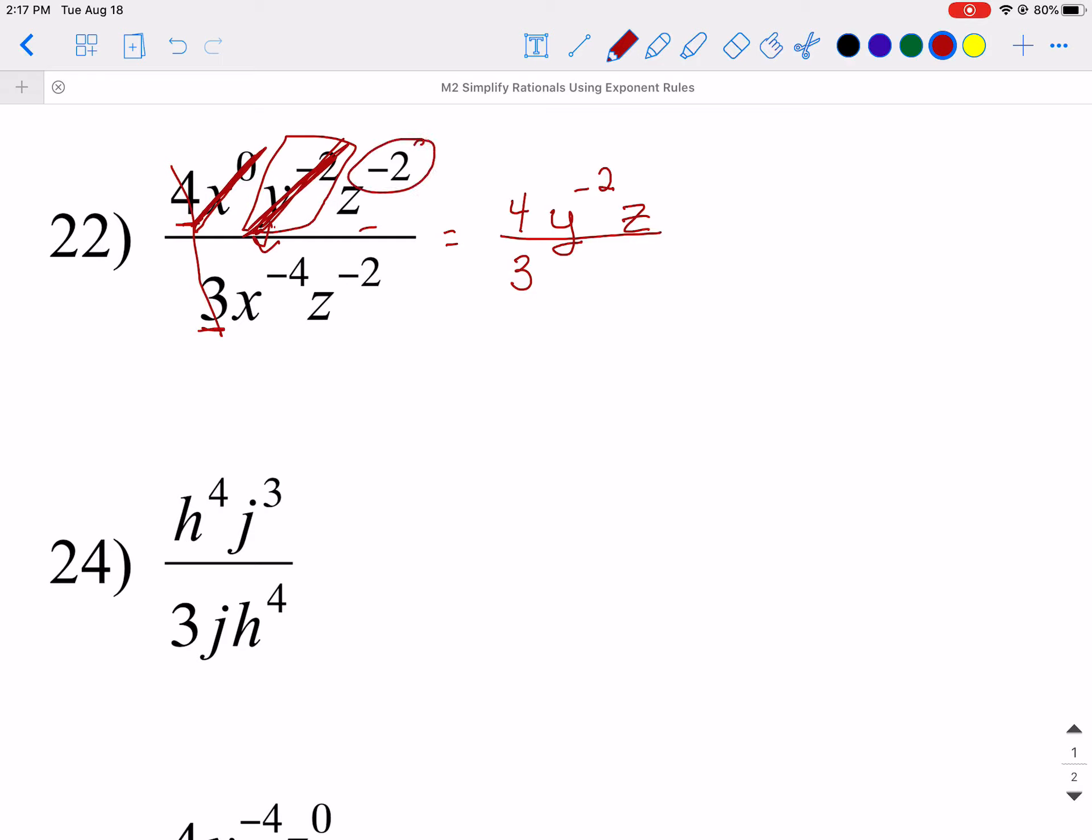Then I look at my z. I've got a negative 2 up here, and on the bottom I've got a negative 2. So I've got negative 2 minus a negative 2, and that is 0. So I have z to the 0. I'll get back to that in just a second. Then I look that I still have that x to the negative 4 on the bottom, so I'm bringing that down, or over, excuse me.